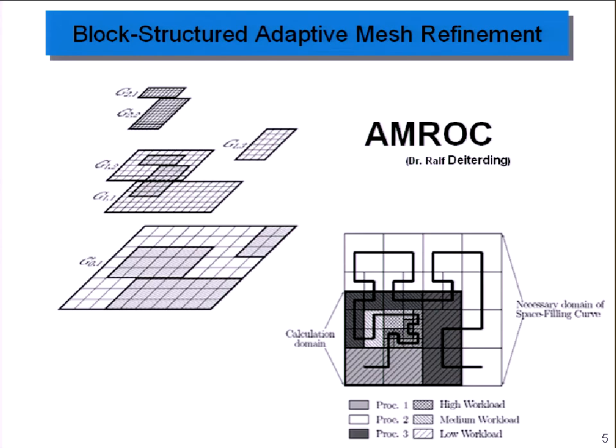Shown here is a schematic of the triple-point structure I was talking about. This is a shock wave, another shock wave, and a shear layer. Shown here is where WENO in red is used and where the centered difference is used. WENO is very expensive, so you could use it everywhere, but it would be very slow and would also give you inaccurate results where diffusion is happening. So we use as little WENO as possible.